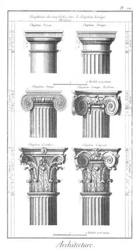Chalcidicum: in Roman architecture, the vestibule or portico of a public building opening on to the Forum, as in the Basilica of Eumachia at Pompeii, and the Basilica of Constantine at Rome, where it was placed at one end.